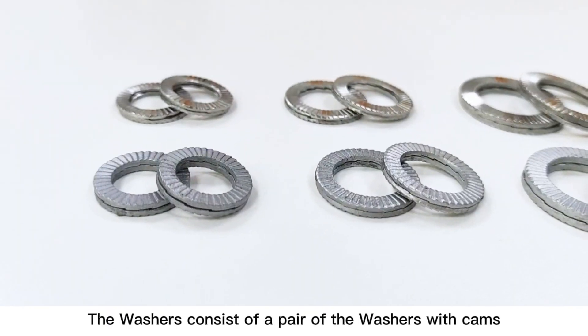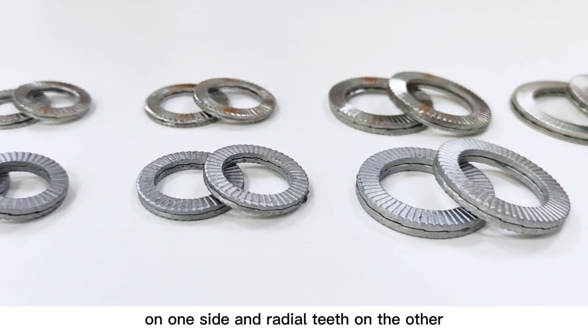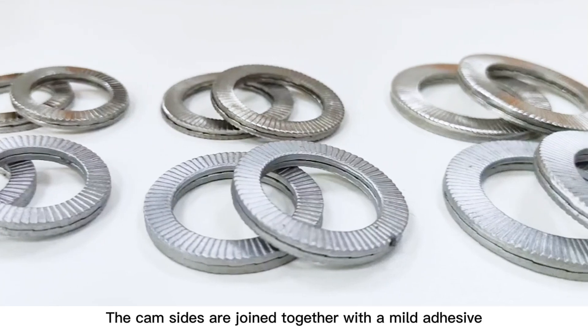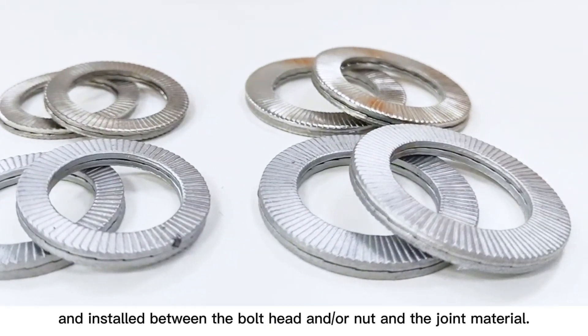The washers consist of a pair of washers with cams on one side and radial teeth on the other. The cam sides are joined together with a mild adhesive and installed between the bolt head and/or nut and the joint material.